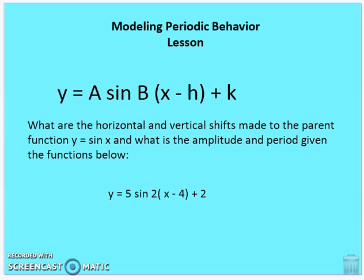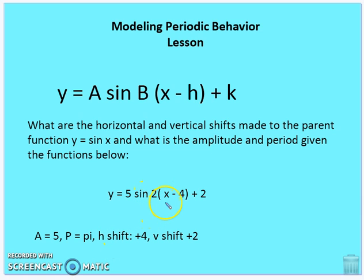Let's take care of some simple equations to understand how amplitude, period, and horizontal and vertical shift occur relative to the parent function. For y equals 5 sine of 2 times (x minus 4) plus 2: the amplitude is 5, the period is 2 pi over 2, which equals pi, the horizontal shift is plus 4 to the right, and the vertical shift is plus 2.